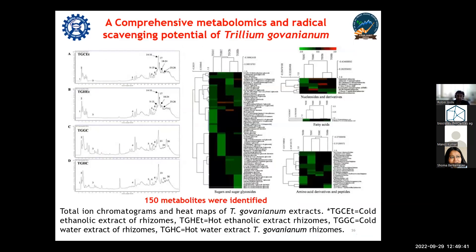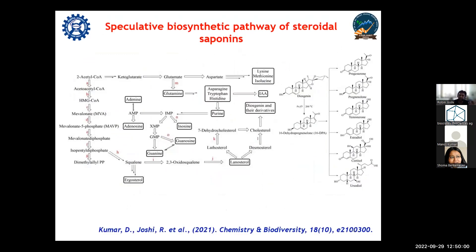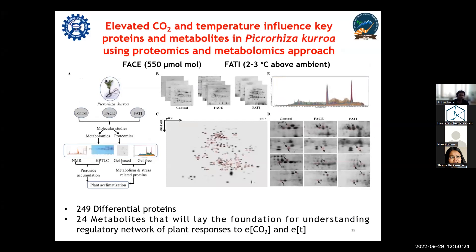Apart from that, Trillium govanum is a very important and endangered crop of the Himalaya. Using non-targeted metabolomics, we identified 150 metabolites from this crop. Using multivariate analysis, we made a speculative pathway to determine how steroidal saponins are synthesized and what role nucleosides play. We then determined the targeted nucleoside content to understand how nucleosides vary between leaf and rhizome on the basis of targeted metabolomics data.